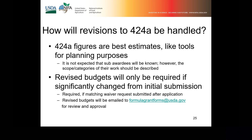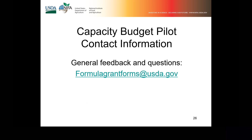The scope and categories of work should be described. Revised budgets will only be required if there is a significantly changed amount from the initial submission, or if a matching waiver request comes in after the application. Those revised budgets will be emailed to formulagrantforms@usda.gov for review and approval. That concludes the training. If you have any general feedback or questions, feel free to reach out to us at formulagrantforms@usda.gov. This session is being recorded, and once I've had a chance to process it, I will send out the YouTube link to everyone who was invited. Thank you everyone.